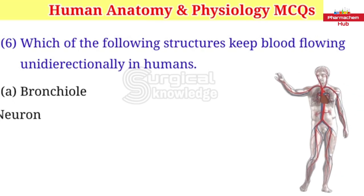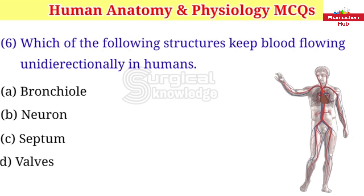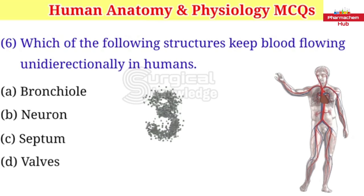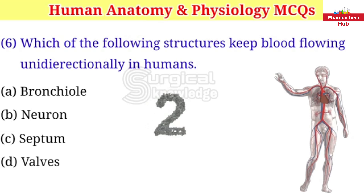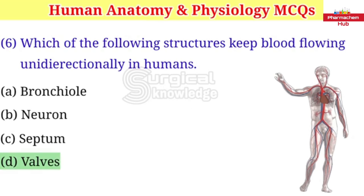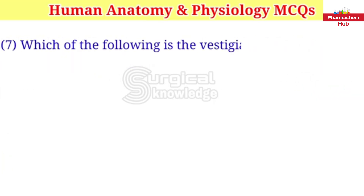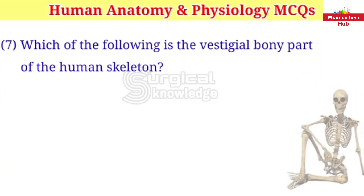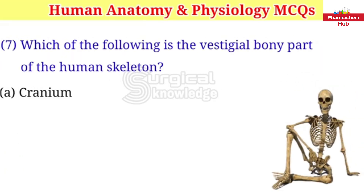Which of the following structures keeps blood flowing unidirectionally in humans? A. Bronchiole B. Neuron C. Septum D. Valves. Right answer is valves.